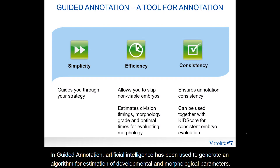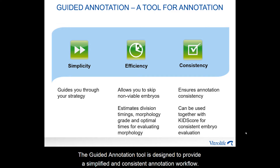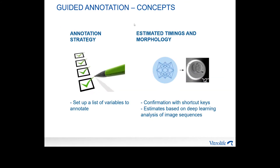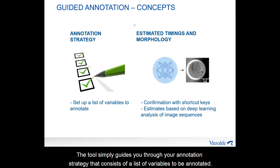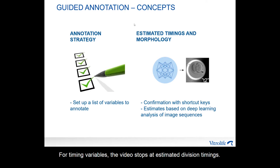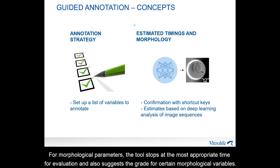In guided annotation, artificial intelligence has been used to generate an algorithm for estimation of developmental and morphological parameters. The guided annotation tool is designed to provide a simplified and consistent annotation workflow. The tool guides you through your annotation strategy, which consists of a list of variables to be annotated. For timing variables, the video stops at estimated division timings. For morphological parameters, the tool stops at the most appropriate time for evaluation and also suggests the grade of certain morphological variables.